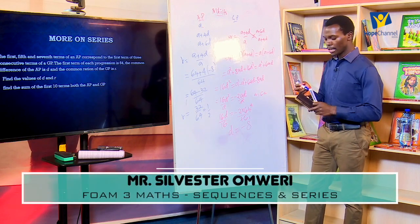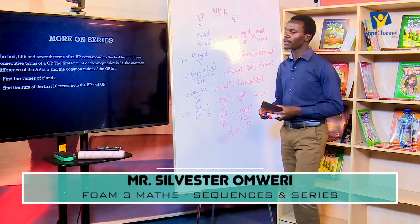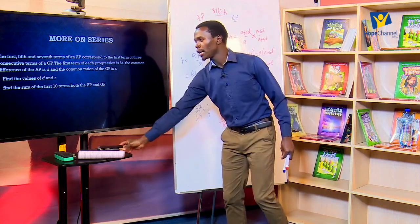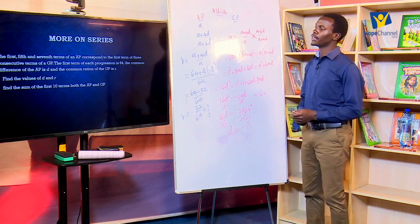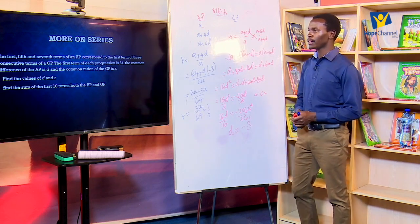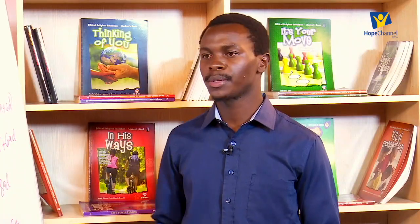After getting R and d, part B — finding the sum of the first 10 terms for both AP and GP — will be very easy using the formulas. I believe the topic is well understood and can be tackled in an exam with ease. Remember, mathematics without practice will not be easy. Always practice, practice, practice to make you perfect. May God bless you. Thank you. Till next time.